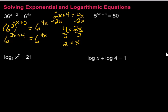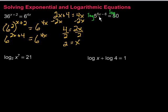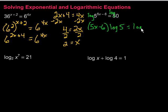Let's take a look at the next one. Our first strategy was to write using the same base — can I make both of these have the same base? I can't make 50 into 5 to some power, so no. We need to bring in some logarithms. We're going to take the logarithm of each side. Then, since we have a power, we can pull it out front: that gives us 5x minus 6 times the log of 5, equal to the log of 50.